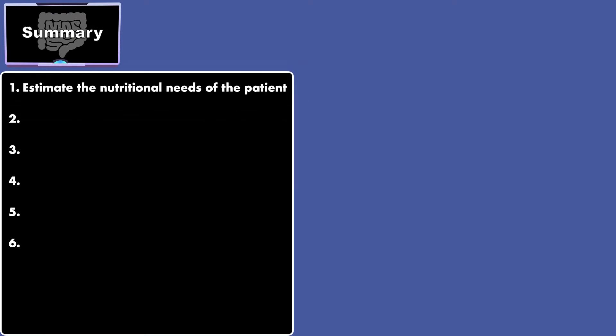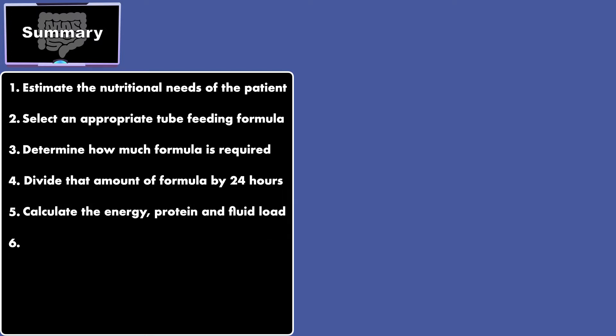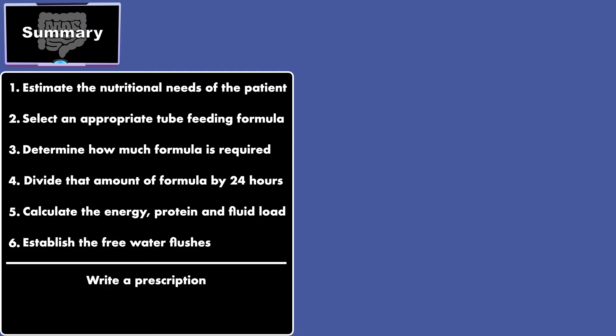When it comes to calculations for continuous tube feeding, you can follow a six-step algorithm. First, you estimate the nutritional needs of the patient. Then, you select an appropriate formula, determine how much formula is required, and divide that amount by 24 hours to get the feeding rate. Next, you calculate the energy, protein, and fluid load, and establish the free water flushes. To finish the order, you write a prescription.